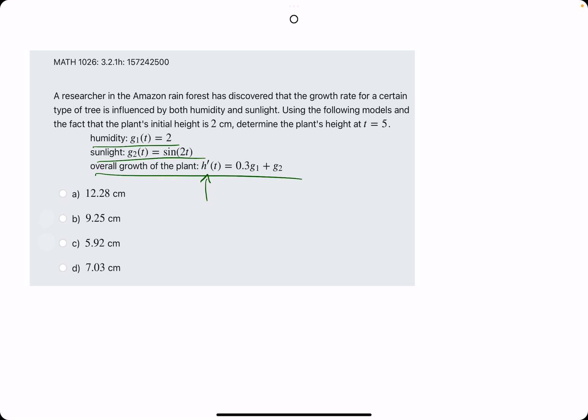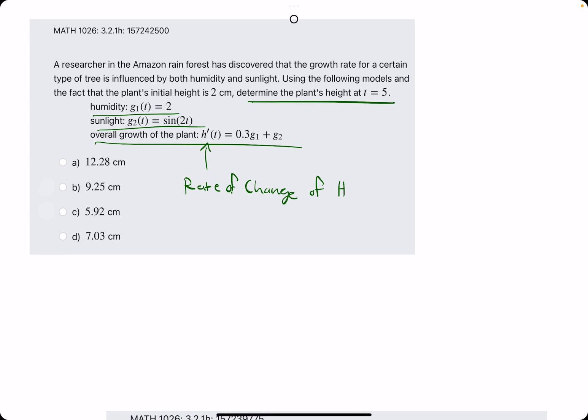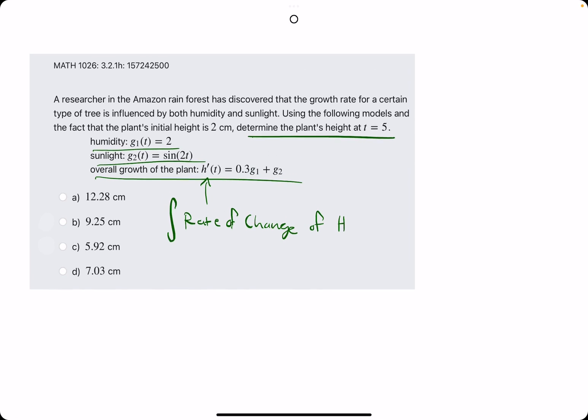Keep in mind, h prime represents the rate of change of the height. Therefore, if they want us to determine the actual plant's height from the rate of change, it's integrating or taking the antiderivative of the rate of change of the height that will give us the height.